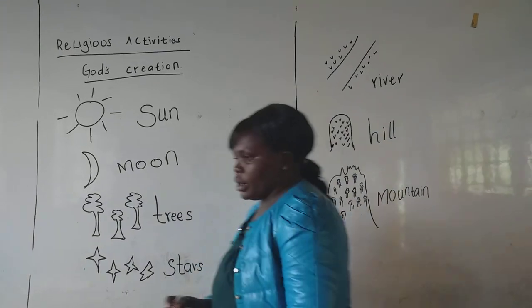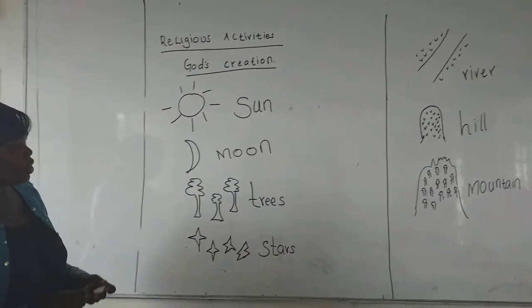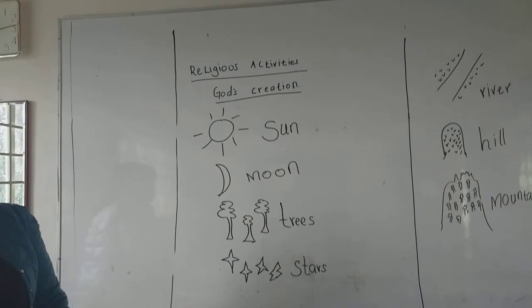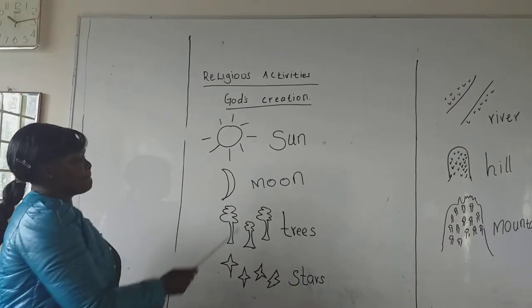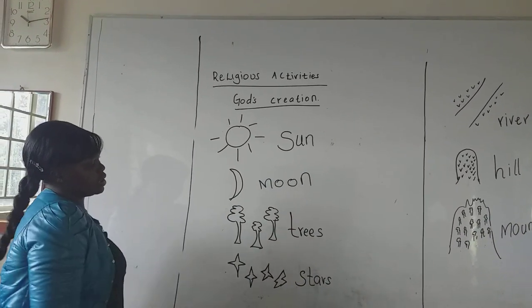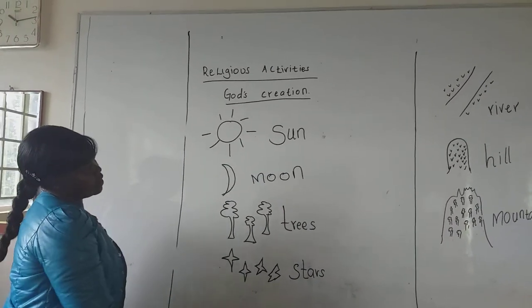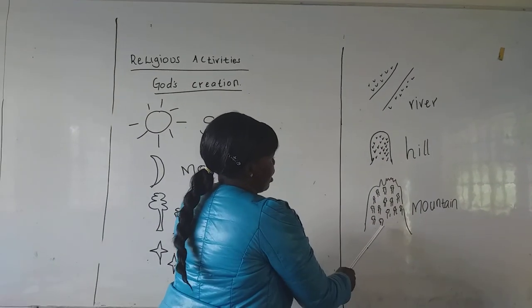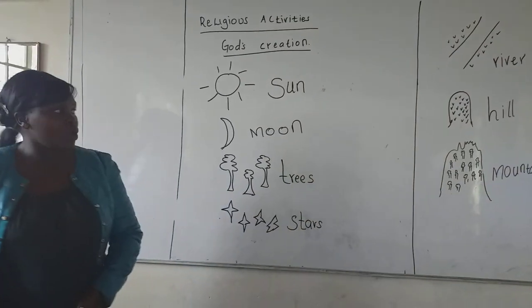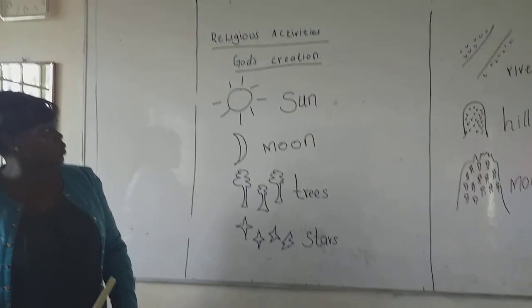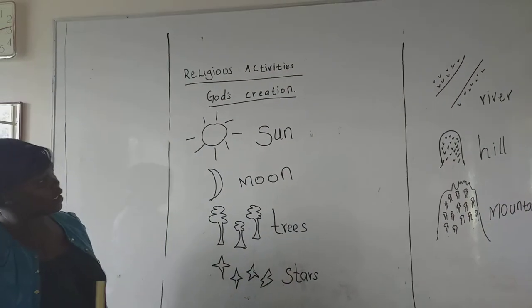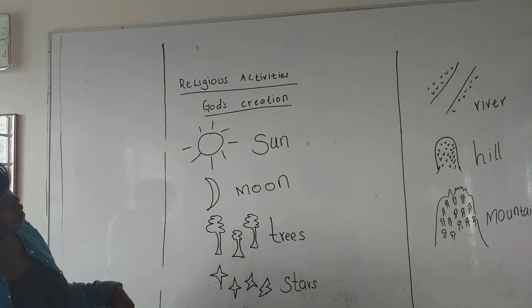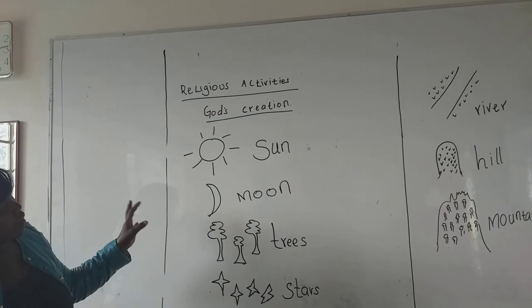Okay, we have seen some of the things that he created. He created sun, moon, trees, stars, river, hill, and mountain. So we have learned that because he created us, he created all these things.